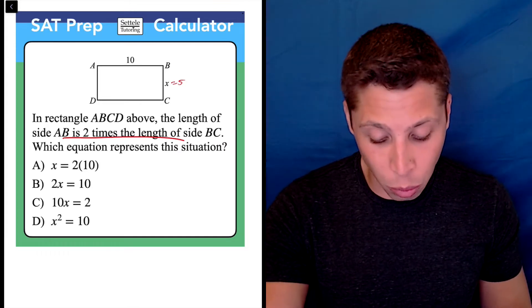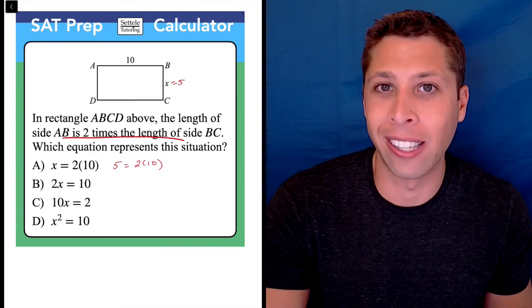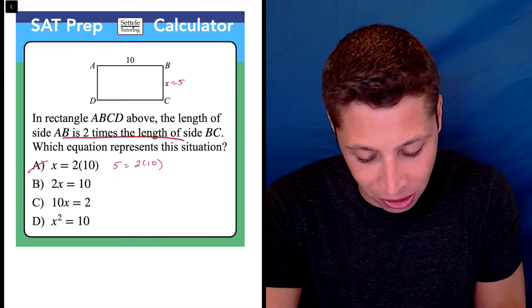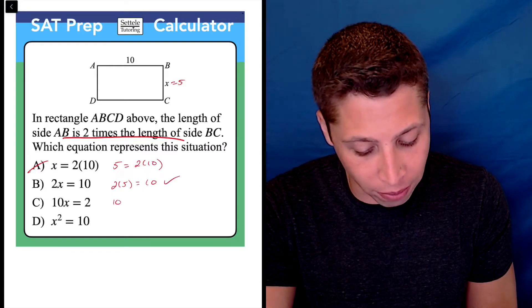just plug it into all the choices. Which one even makes sense? Well, five does not equal two times 10. That's five is not equal to 20. Those are different numbers. Two times five, that is equal to 10. So that seems good, but we can just double check very quickly.